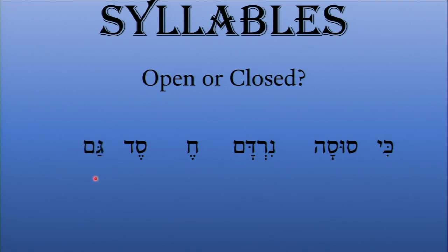When you look at each syllable, you ask yourself: is this open or is this closed? You look at the consonants and vowels and ask — is it consonant-vowel-consonant, in which case it's closed? Or is it consonant-vowel, in which case it's open?